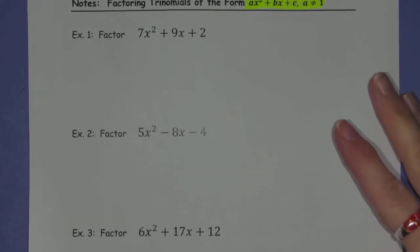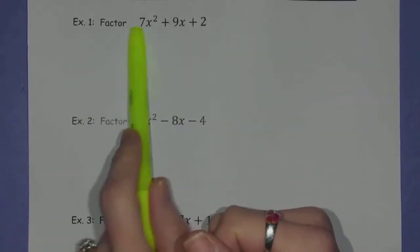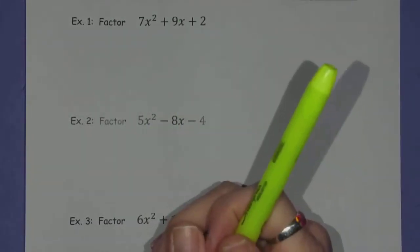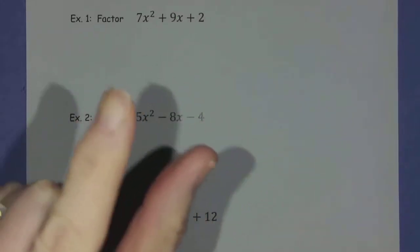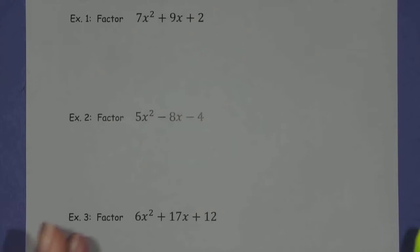Now this isn't really much different than the way we factored trinomials before. It's just maybe this much more challenging because it's not a 1 here in front. So I'm going to show you two different ways to do this.